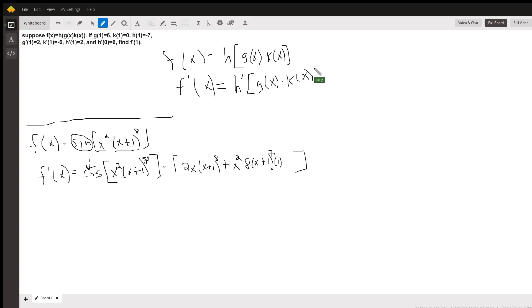But then I have to multiply by the derivative of the inside—the chain rule. And this is a product of two functions, so I'm going to take the derivative of the first function times the second function.